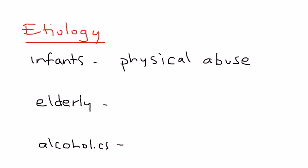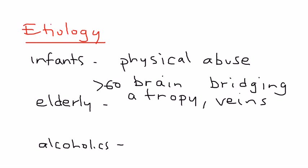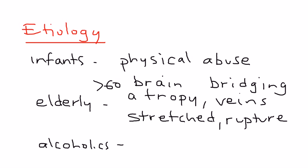The elderly develop this because as a person ages — especially above the age of 60 — their brain starts to atrophy. When there is brain atrophy, there are veins that exist in the dura called bridging veins. As the brain atrophies, these veins can easily be stretched, and that stretching can eventually cause rupture. That rupture is essentially what produces the subdural hematoma, this intracranial bleed. This is very commonly tested.